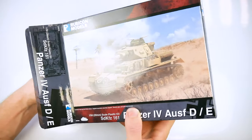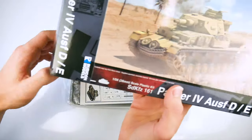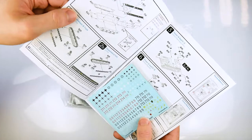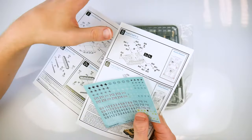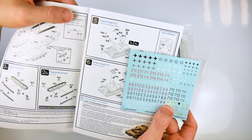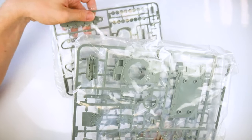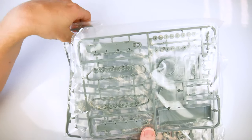The Panzer IV Ausf D and E variants took the basic design fielded in the early part of the war and upgraded it with more armour, a hull mounted machine gun, and improved commander's cupola on the later version. The Rubicon kit includes five frames with parts to create either version which were produced up until 1941.